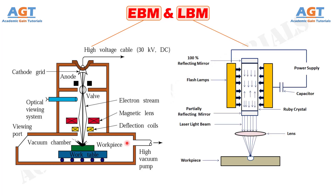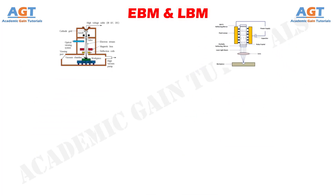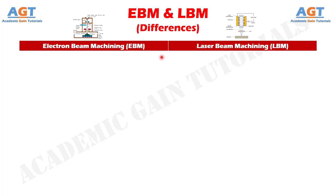Laser beam machining is a form of machining that uses heat directed from a laser beam. This process uses thermal energy to remove material from metallic or non-metallic surfaces. Now let's look into the basic differences between electron beam machining and laser beam machining in a tabular form.